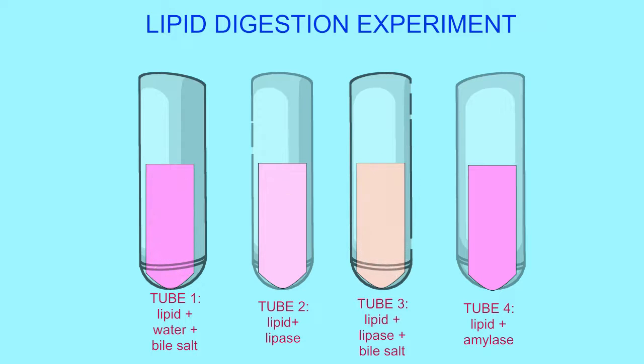And we simply observe these tubes over time. Because if the lipid fat is digested, then it will produce fatty acids, which will alter the pH of the solution and change the pH indicator from pink to yellow or white. And we look to see if there are any tubes where there is no color change.